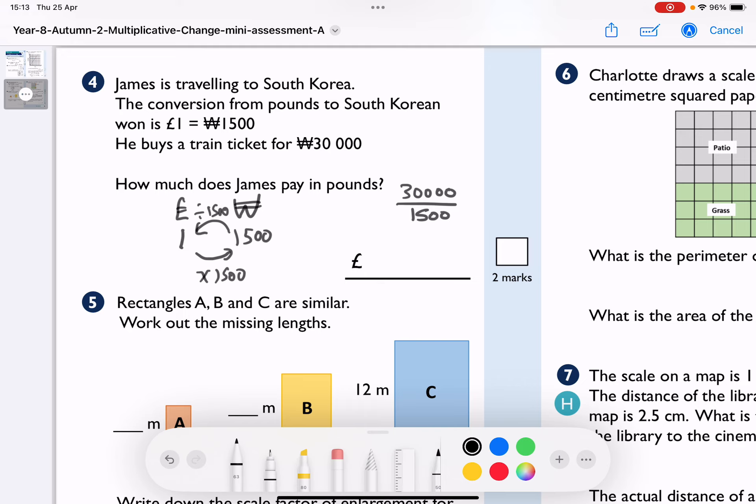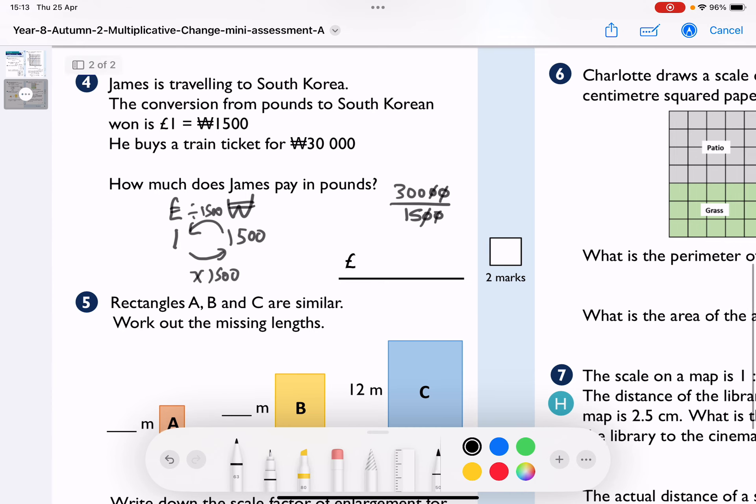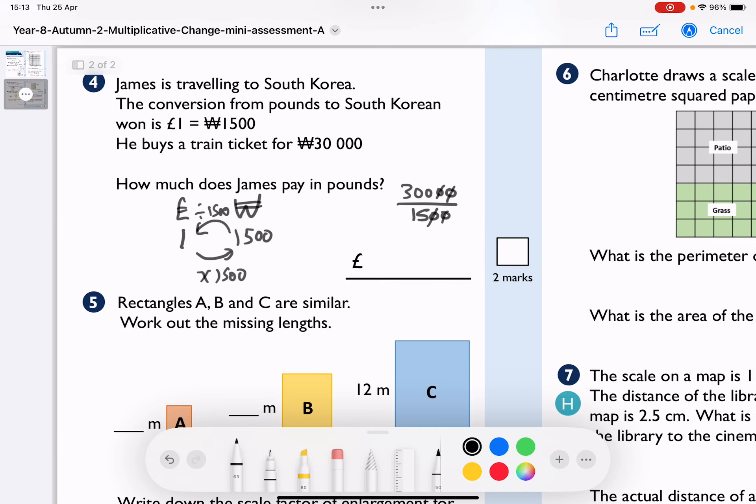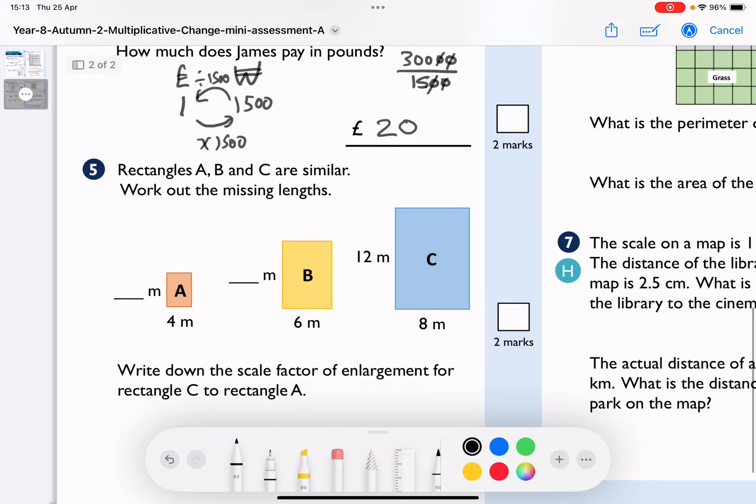If I divided them both by 100, I would get rid of two zeros from each. Now I'm doing 300 divided by 15. 15s into 30 are two, with no remainder. 15s into zero, so that is £20. Okay.